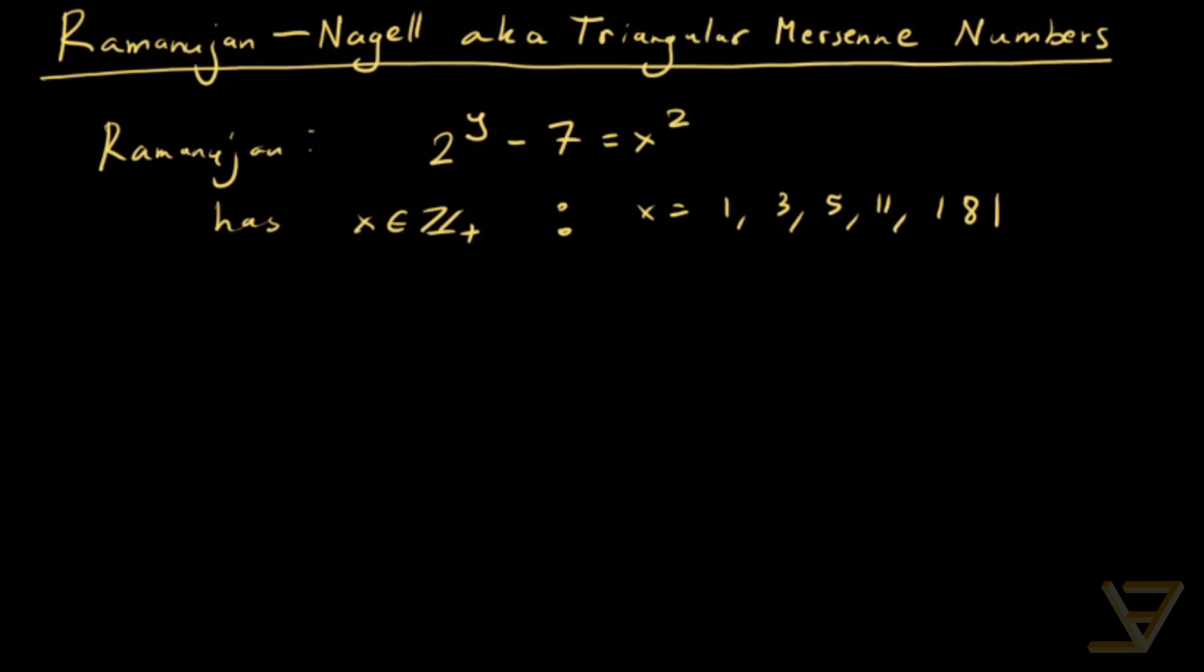And so, a long time later, Nagel proved this. And what we're going to be doing today is using this to find all numbers that are both triangular and Mersenne.